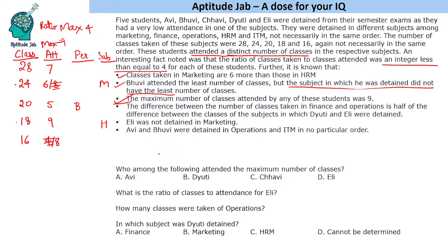The difference between the number of classes taken in finance and operations is half of the difference between the classes of the subjects in which Duthi and Ali were detained. Finance and operations must come from the remaining numbers: 28, 20, and 16. Differences are: 28 and 20 give 8, 28 and 16 give 12, 20 and 16 give 4. So the Duthi-Ali difference should be double, giving 16, 24, or 8.